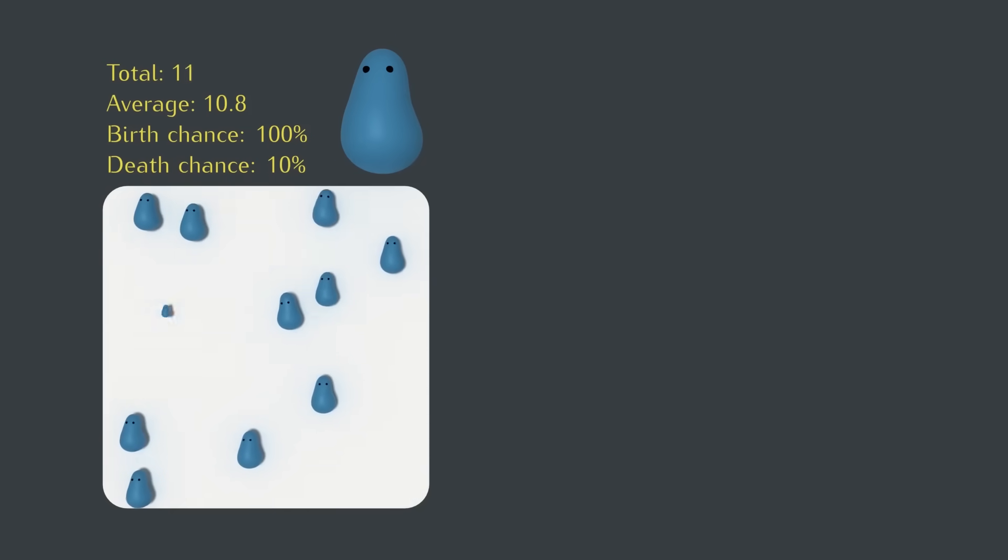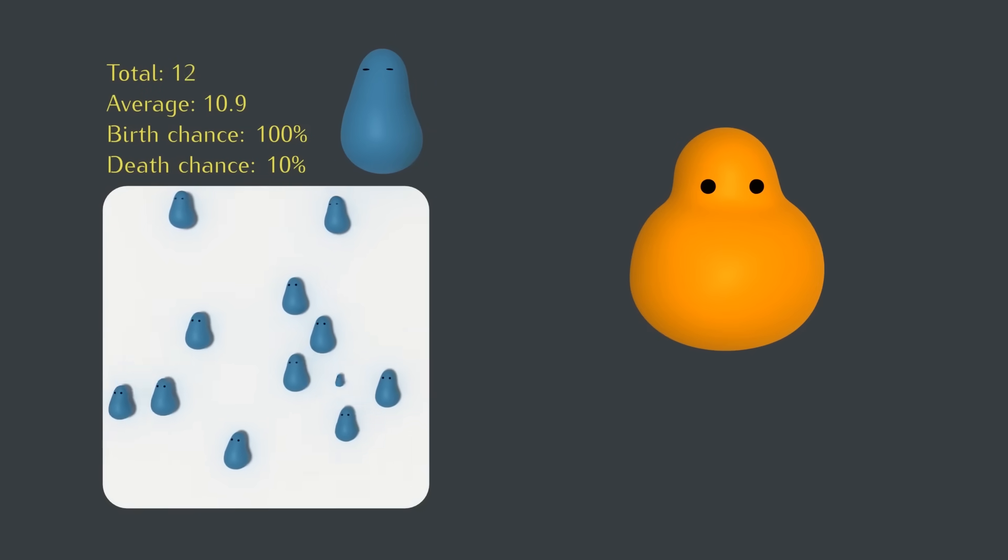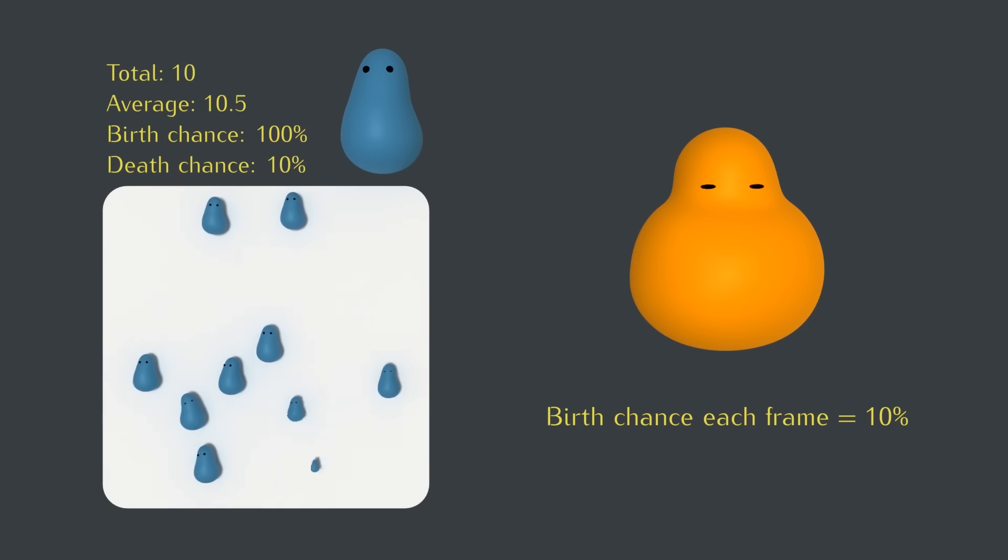For comparison, let's make a second simulation with this other type of blob creature. Compared to the first kind, this blob creature will be more like a planet. It'll form less often, but it'll also die less often. Each frame, there'll only be a 1 in 10 chance of one of these forming, but each blob creature will only have a 1 in 100 chance of dying.